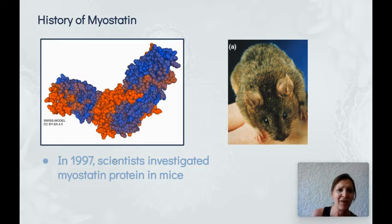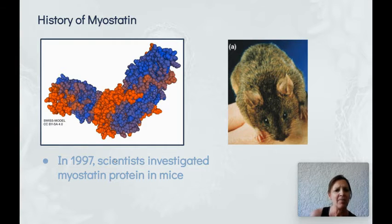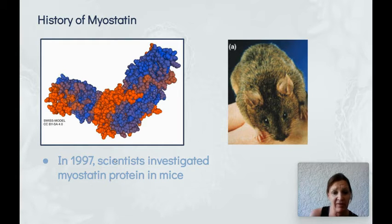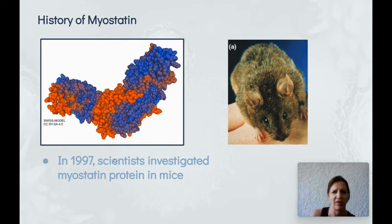The myostatin protein was actually discovered in 1997, and really the first work in that was via mice. Scientists learned a whole bunch about myostatin by working with these large mice.